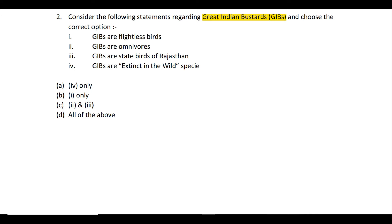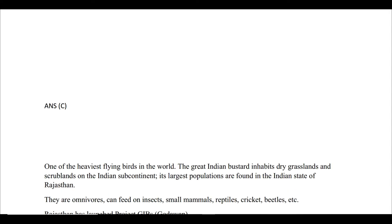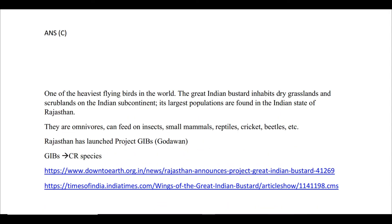So the first statement is incorrect, the second is correct, the third is correct, and the fourth is incorrect. The answer is C — statements 2 and 3. GIBs are one of the heaviest flying birds, inhabiting dry grasslands and scrublands of the Indian subcontinent, with the largest population in Rajasthan.